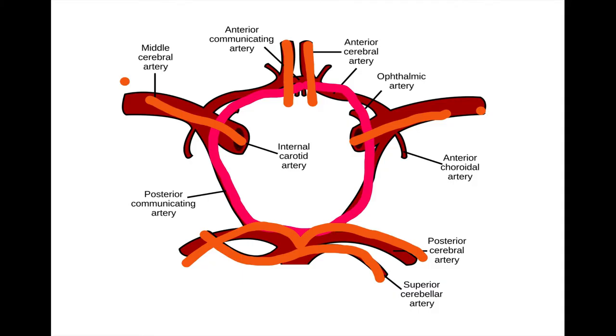The circle itself is made up of two communicating arteries: the short anterior communicating artery in between the two L's, and the longer posterior communicating arteries making up the bottom half of the circle.